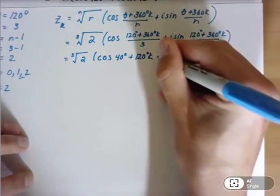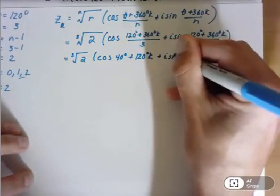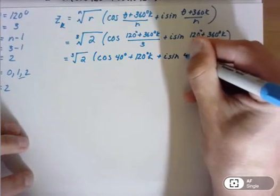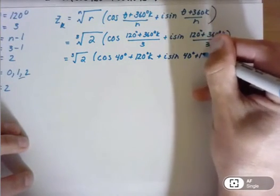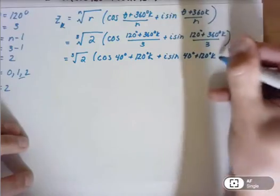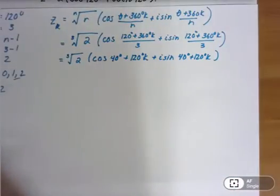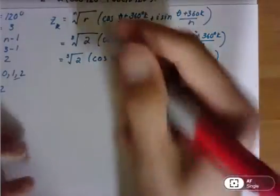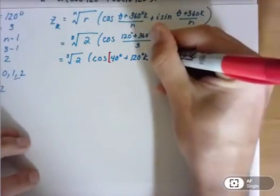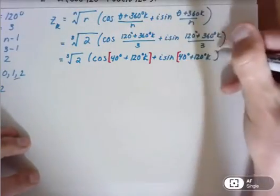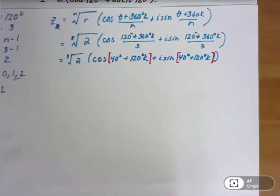And that's going to be plus i sine of the same thing, 40 degrees plus 120 degrees k. Now, if you want to, you can just put these in brackets or parentheses just to separate to see what's going in for our argument for our function. So there we go.